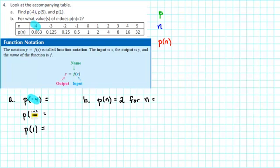Similarly, for p(5), we will be looking for 5 as an input, and then writing down the corresponding output. And for p(1), we will locate 1 in the input row, and we will be looking for the corresponding output.